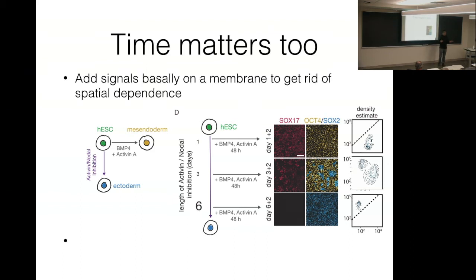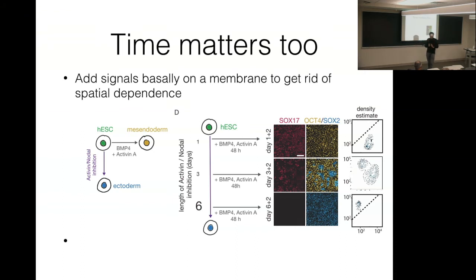All of these cells can listen to signal — they have no problem receiving it. But the program they execute every day later is different. This is so dramatic: take cells, remove the gates, add signal right away — everybody becomes muscle and bone. Wait a couple of days, add signal — some become muscle and bone, some become skin. Wait another two days, add the same signal — all of them become some kind of neuron. The same signal added at different times during development gives rise to dramatically different tissue types.